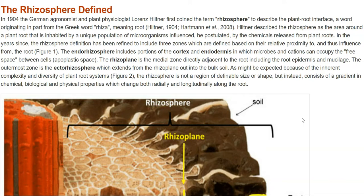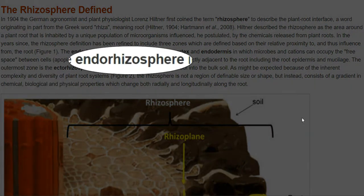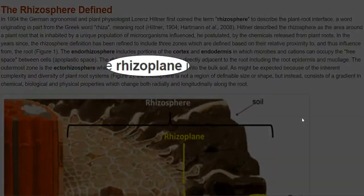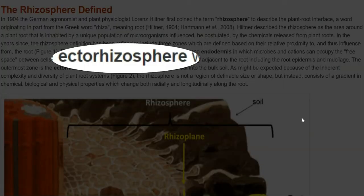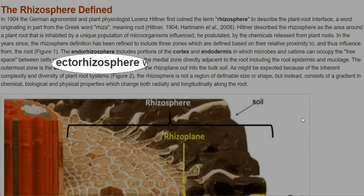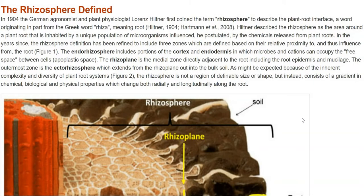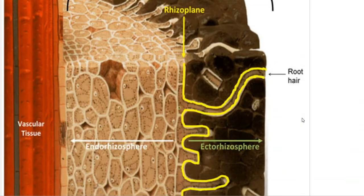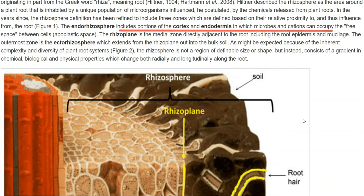This rhizosphere definition has further refined in subsequent decades and it has been referred as three zones: endorhizosphere, rhizoplane, and ectorhizosphere. The endorhizosphere is a portion of the cortex as well as endodermis in which microbes and cations can occupy.